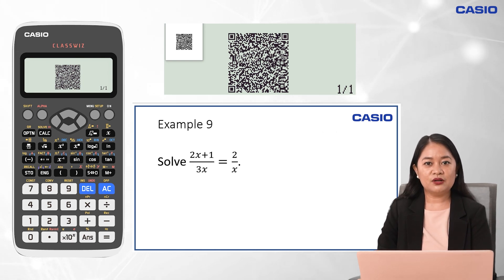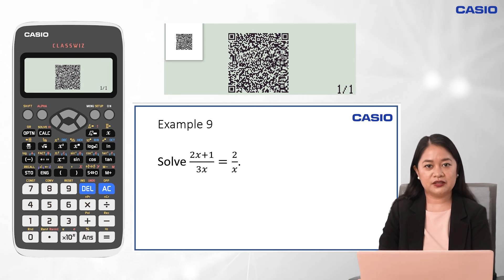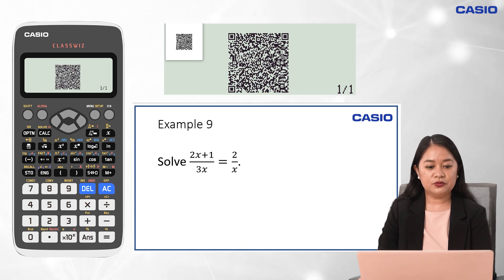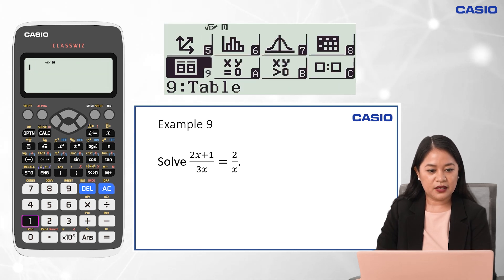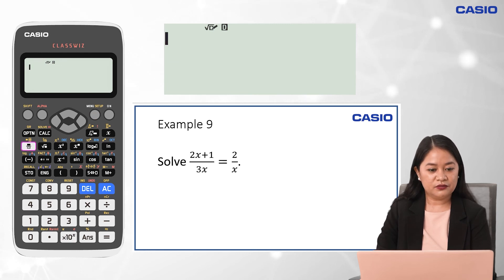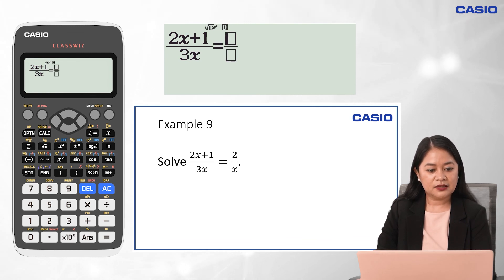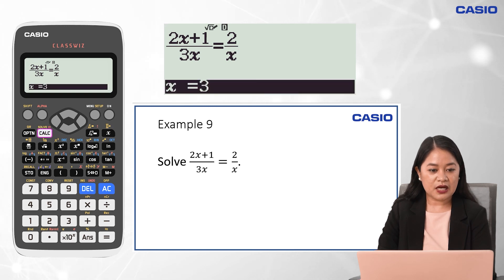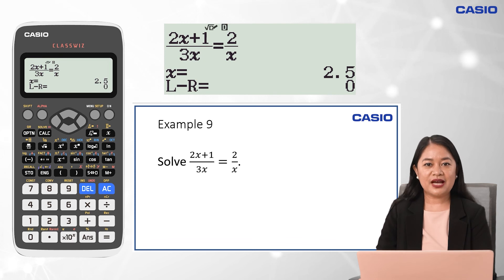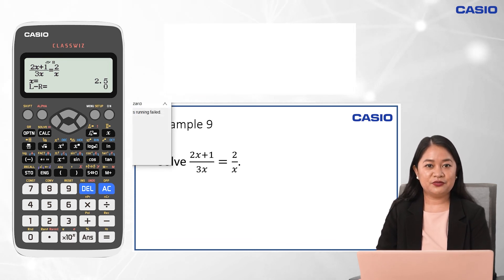Now, let us solve this rational equation. Recall that a rational equation is an equation that has at least one term which is a rational expression. Using the Calculate menu, press Menu and 1. Input fraction 2x plus 1, right arrow key, 3x, right arrow key. Input an equal sign by pressing Alpha, Calc. Then fraction button again, input 2x, right arrow key, and x. Press Shift, Calc, and Equal. The value of x that satisfies this rational equation is 5 halves or 2.5.